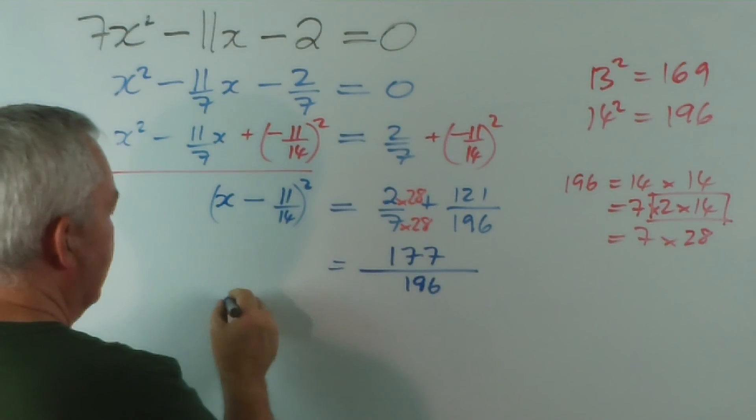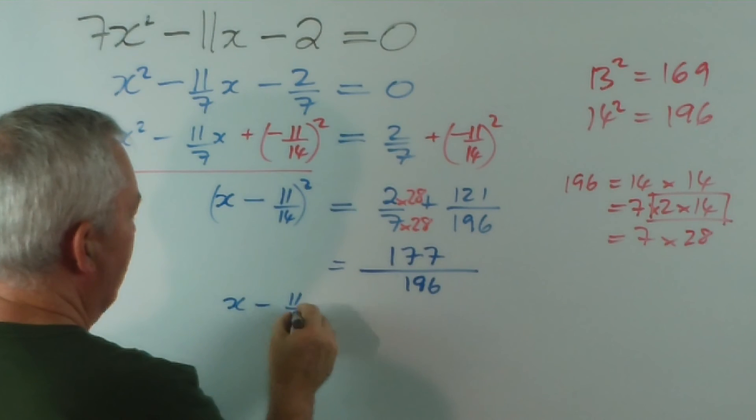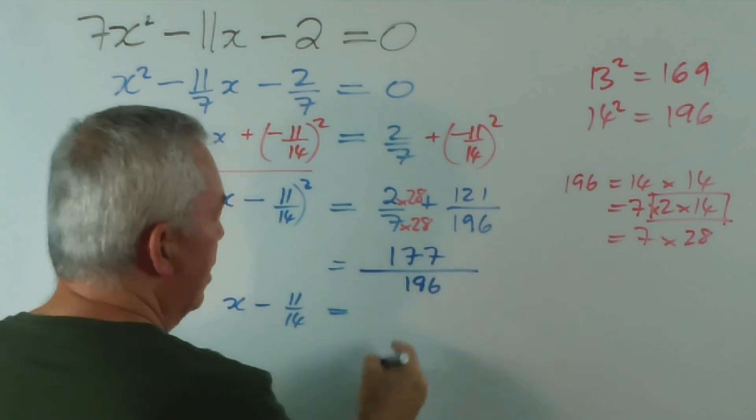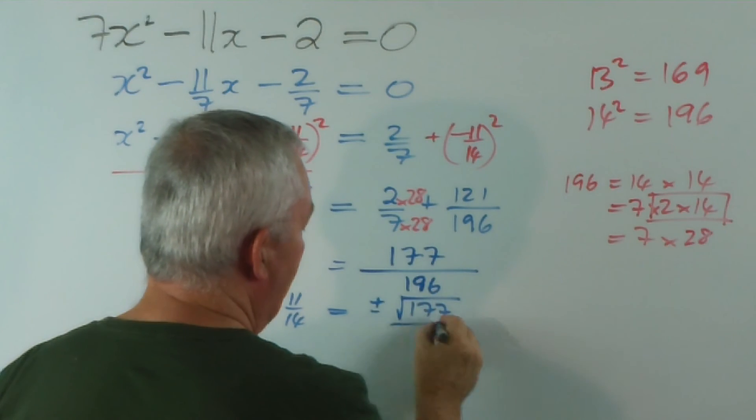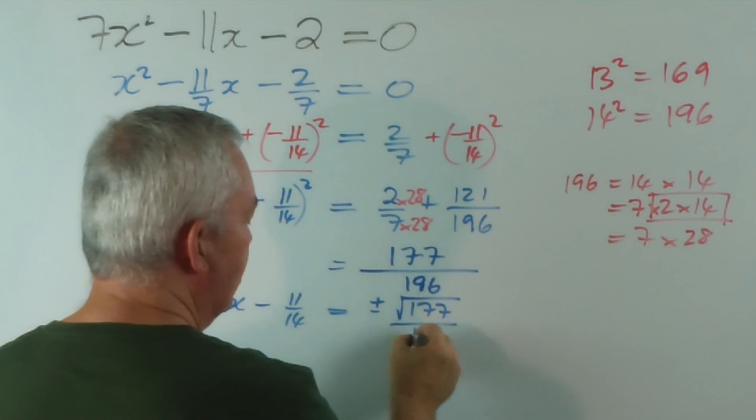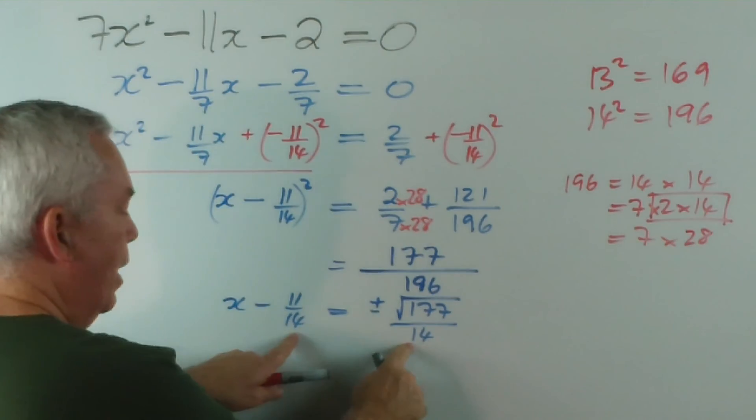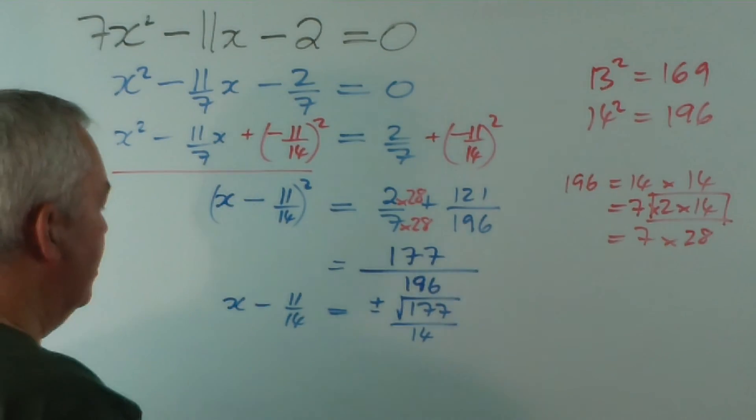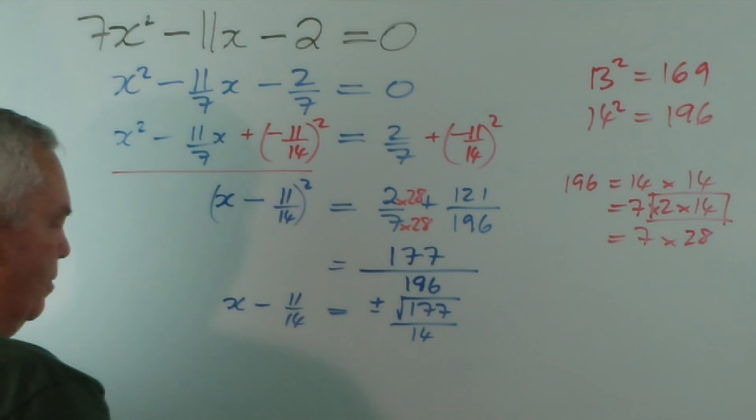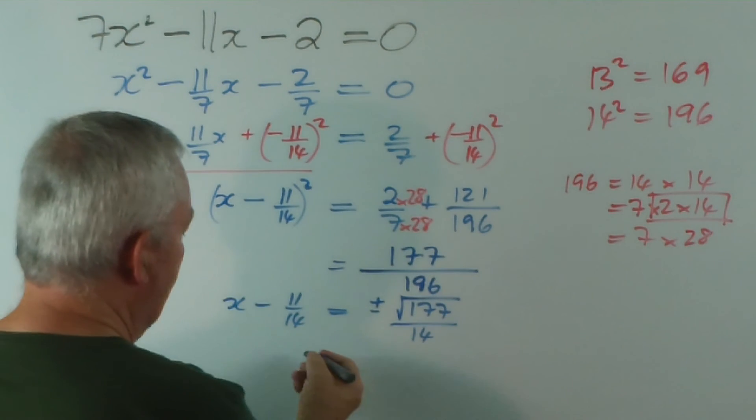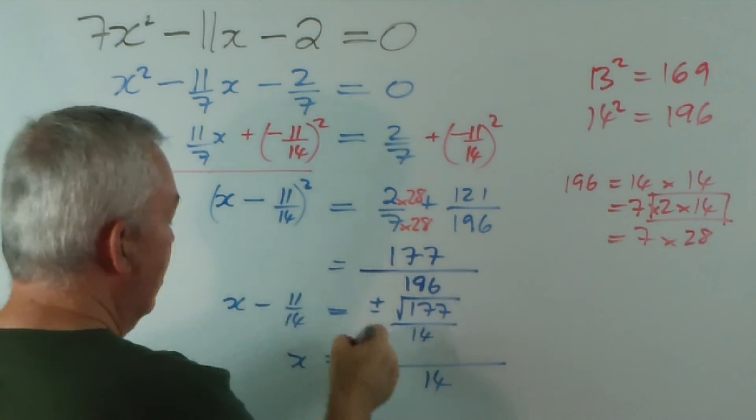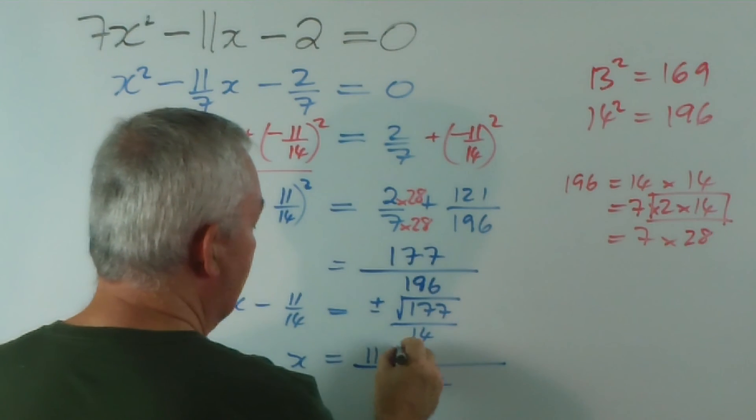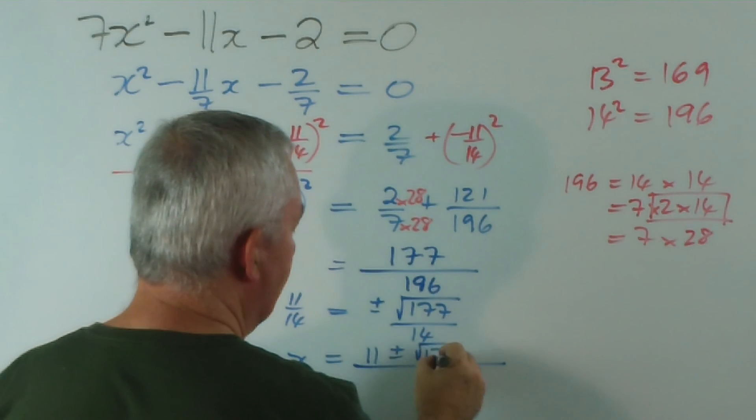Let's now take the square root of both sides. x minus 11 on 14 equals plus or minus the square root of 177 over, and the square root of 196, and it's back to 14 again. And, again, you've got the same denominator. So, leaving it as a fraction can be advantageous. Add this to both sides, and we get x equals, everything's over 14, both sides, this becomes a plus 11, plus or minus root 177.